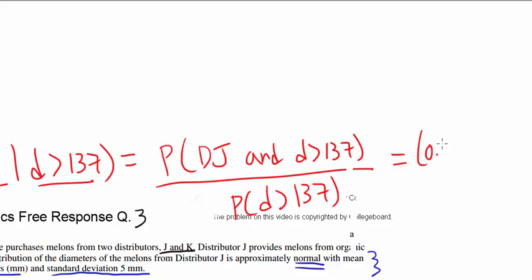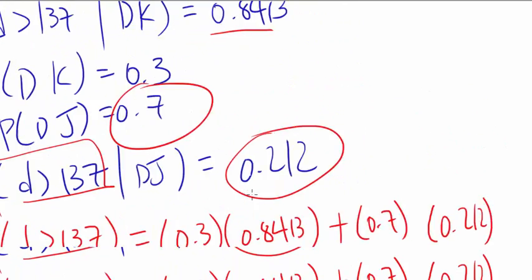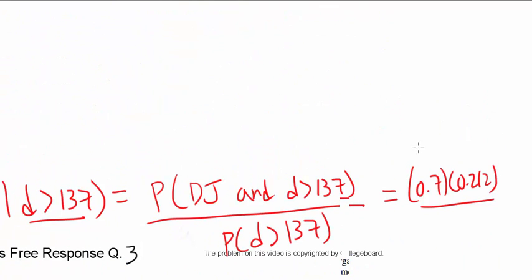So that's 0.7 times 0.212, and probability of it being more than 137 we already found is 0.401. So the answer is, let me plug this into my calculator, about 0.370. So that's the answer.